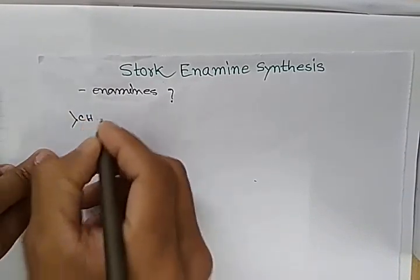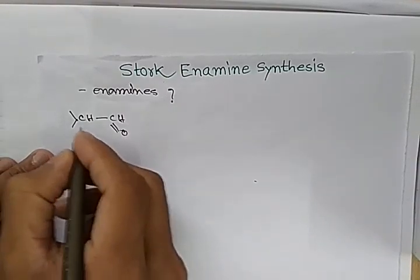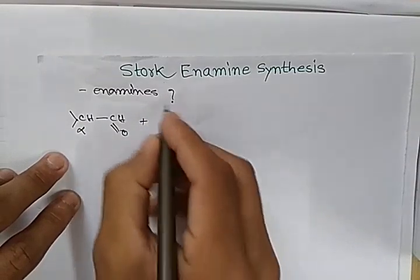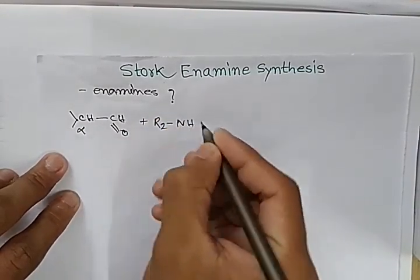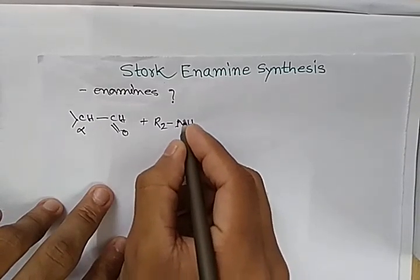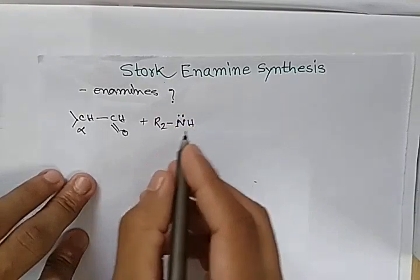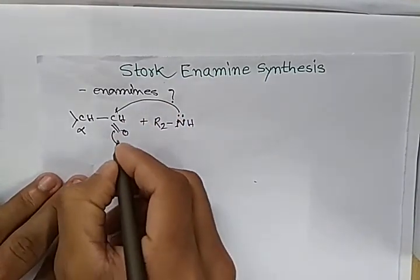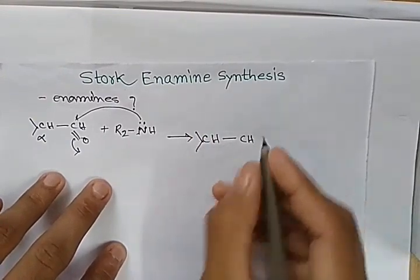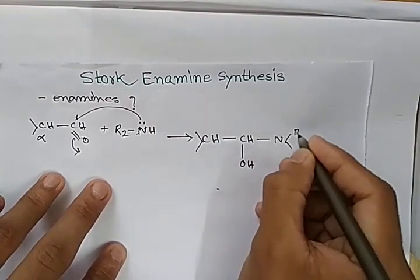Now we take a carbonyl compound. It contains at least one alpha hydrogen, followed by an amine — that is, a secondary amine. You can also use a primary amine here. The lone pair of nitrogen attacks here, this opens up, and we get an OH group and addition of an R2 group.